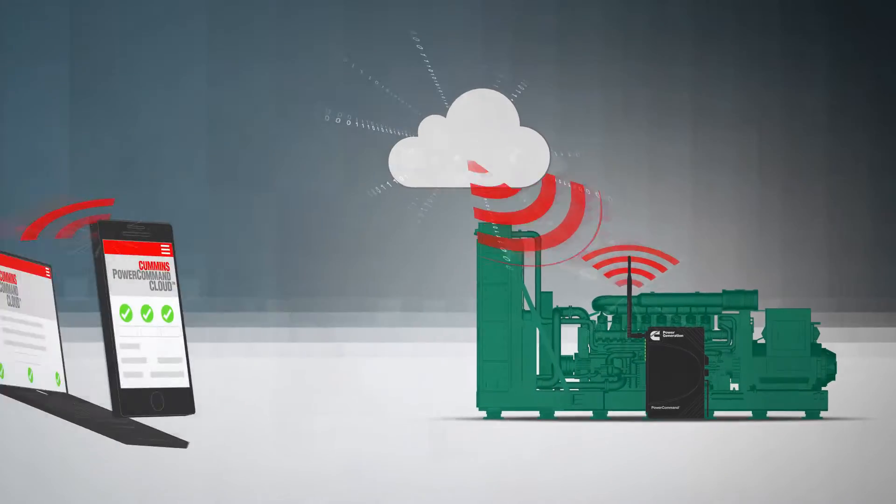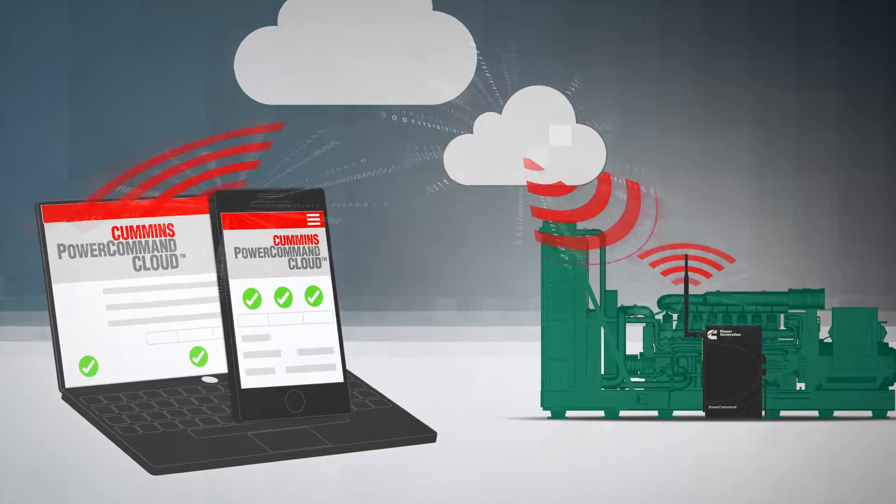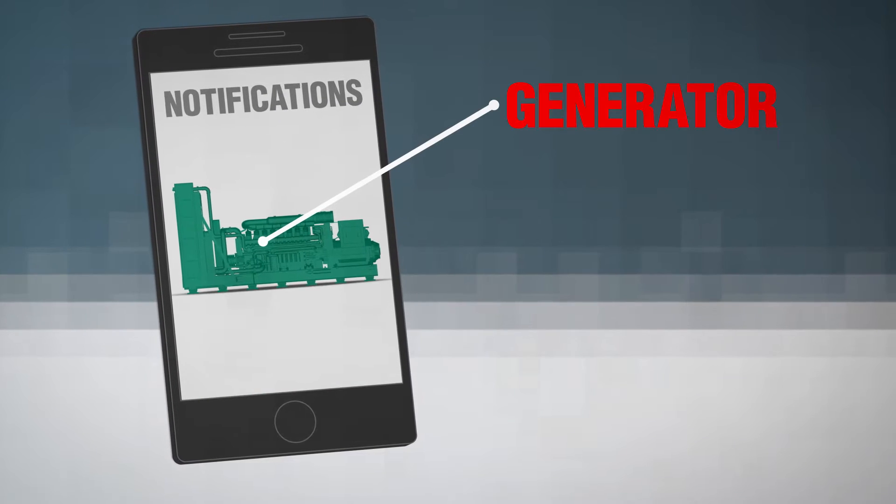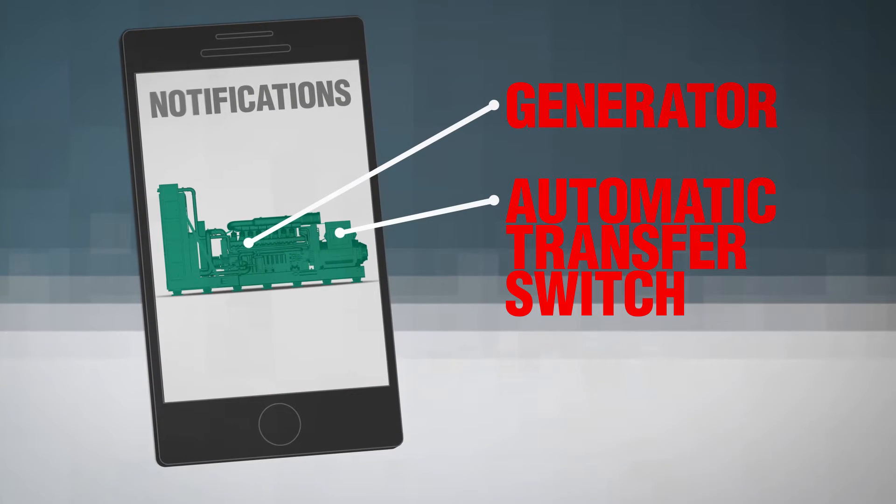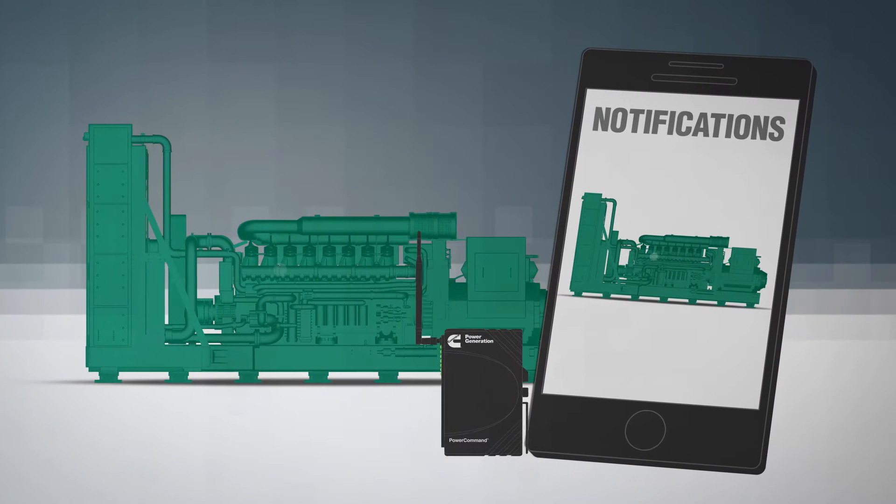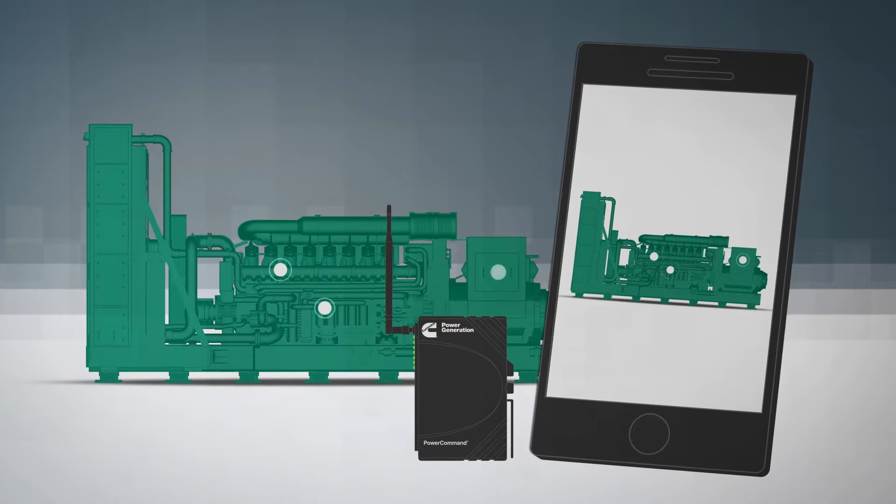With the ability to remotely monitor and control emergency backup power, Power Command Cloud provides real-time notifications and warnings related to the generator, automatic transfer switch and sensors to reduce downtime. With a few taps or clicks using the mobile app or computer,